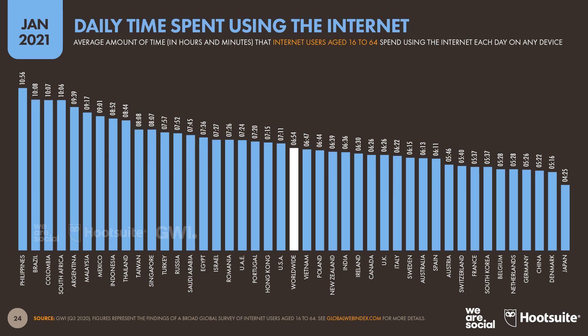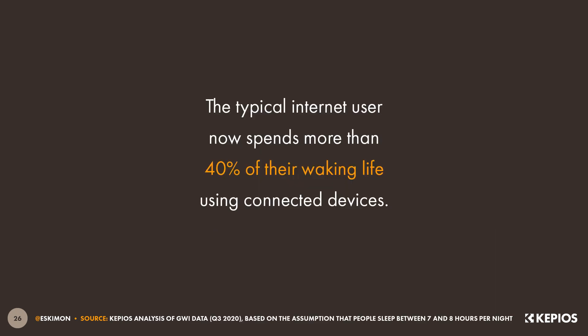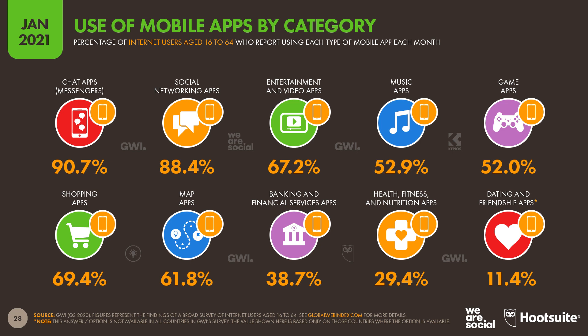The latest numbers from GWI show that the typical global internet user now spends an average of almost seven hours a day using the internet. As you can see on the chart here, things do vary meaningfully by geography, with Filipinos spending an average of almost 11 hours a day online, compared to an average of just four and a half hours per day in Japan. Based on that worldwide figure, internet users now spend an average of more than 48 hours per week using the internet, equating to more than two full days out of every seven. We spend roughly a third of our lives asleep, which means the typical internet user now spends more than 40% of their waking life using connected devices — partly because there are now apps to help with pretty much every aspect of our lives, from staying in touch with friends and family, to watching TV and movies, playing games, managing our finances and even finding love.